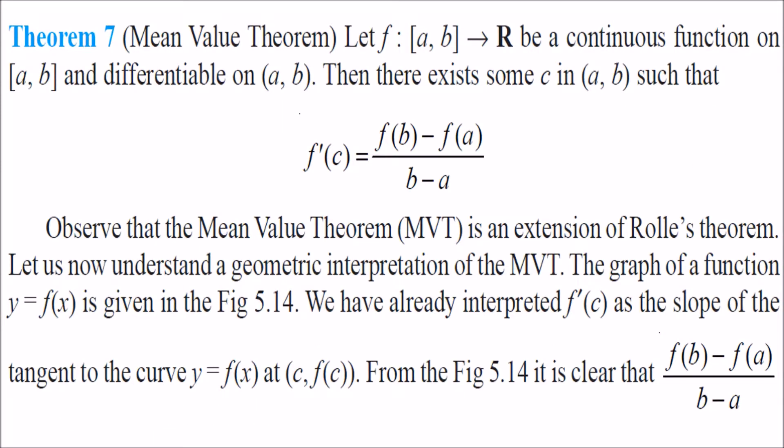Then we have mean value theorem. If f is again a function from [a,b] to R, this is a continuous function on [a,b] and this is differentiable on (a,b). There must exist some c in (a,b) such that f dash c is (f(b) minus f(a)) by (b minus a).